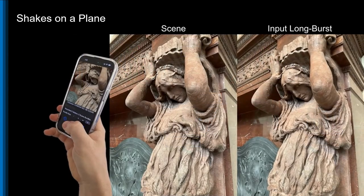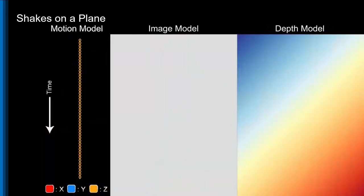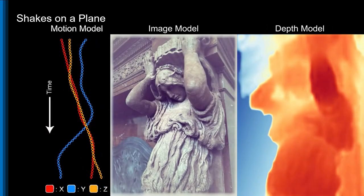Visualizing the training process, we see how from just a tiny bit of natural hand tremor, our model quickly distills high-quality camera motion and depth estimates.